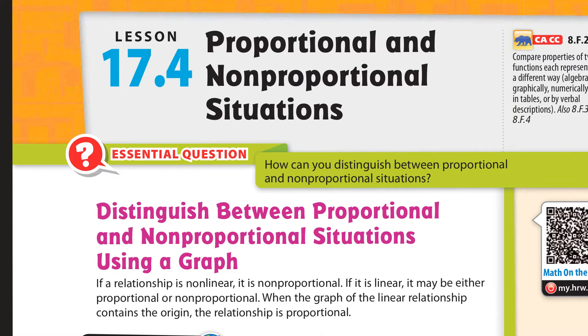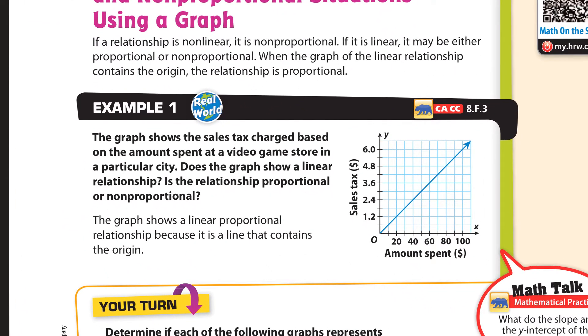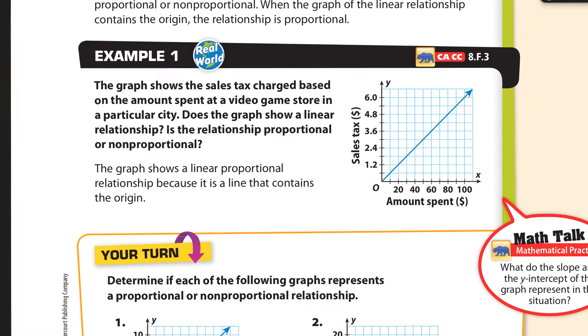We're going to use this information in example one. The graph shows the sales tax charged based on the amount spent at a video game store in a particular city. Does the graph show a linear relationship? Yeah. It's a straight line. Now, is it proportional? It is a straight line, and it crosses the origin. It's proportional. Easy peasy.